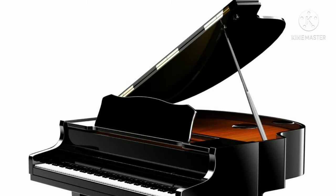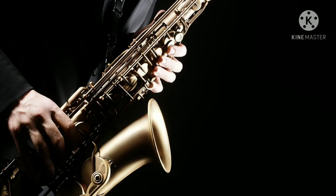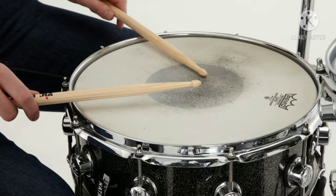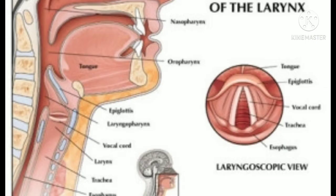Some musical instruments like piano, guitar, saxophone, violin, and drum have vibrating substances inside them. Now, how do we produce sound? We produce sound from our throat. What is the vibrating object there? It is the vocal chord. While you are speaking, the vocal chord gets the vibration, and that is why the sound is produced.